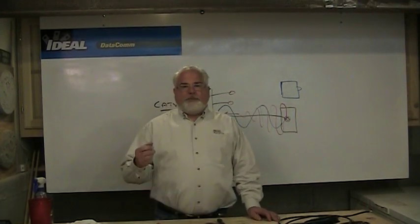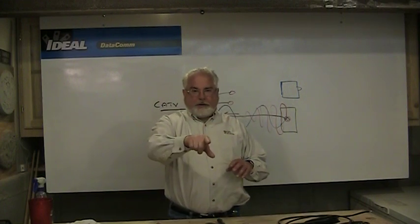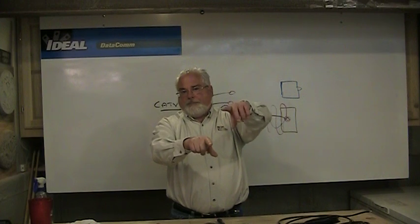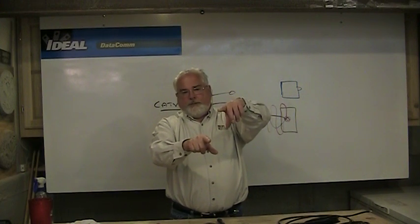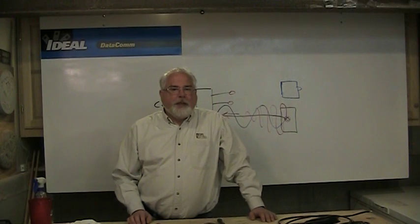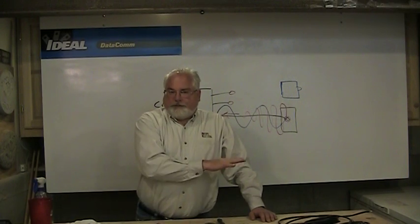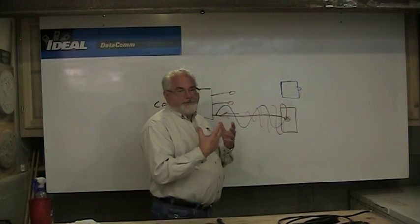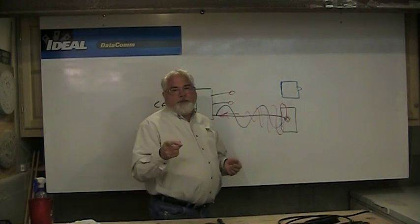Inside the termination cap is actually a 75 ohm resistor. It takes that resistor and puts it across the center conductor and the shielding, which is the second conductor in the cable. So it puts a 75 ohm load across the connection. The little resistor inside the termination cap will take this energy traveling down the cable and actually absorb it and dissipate it in the form of heat.